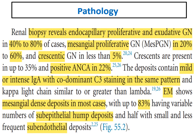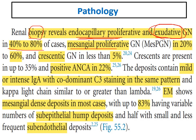On renal biopsy, light microscopy shows endocapillary proliferation — a proliferative pattern with exudation, which is much more prominent than in post-streptococcal GN. Higher exudation is seen in around 40 to 80% of patients. Mesangial proliferation is present in 20 to 60% of patients. The most common finding is endocapillary proliferation with prominent exudation.